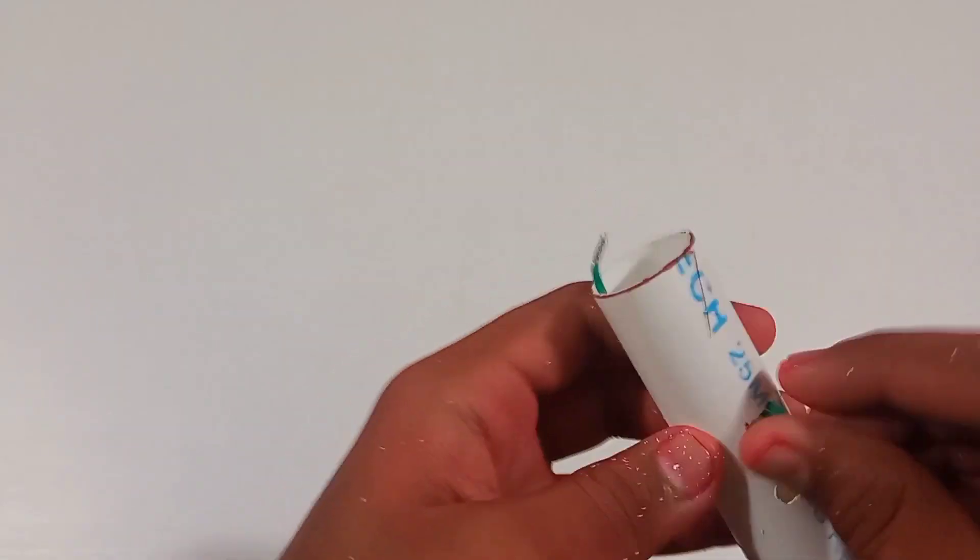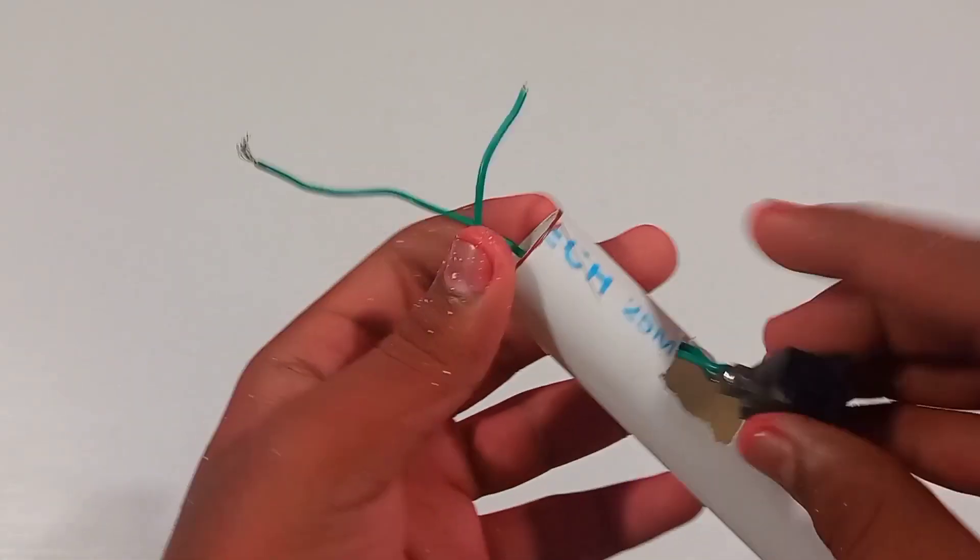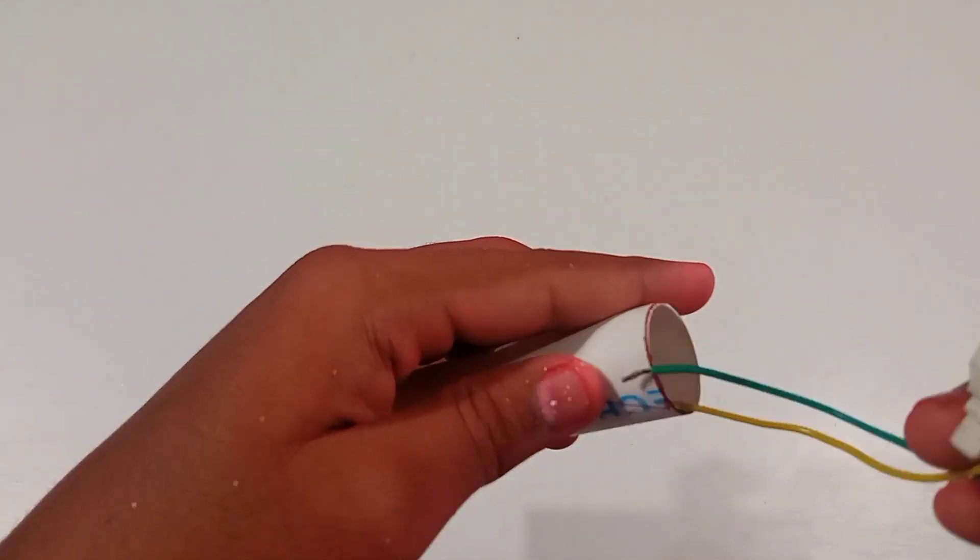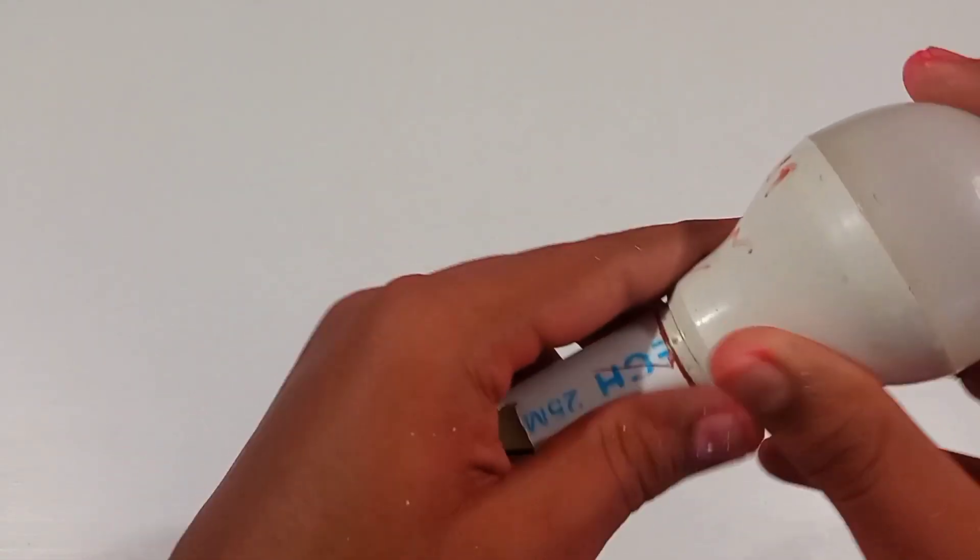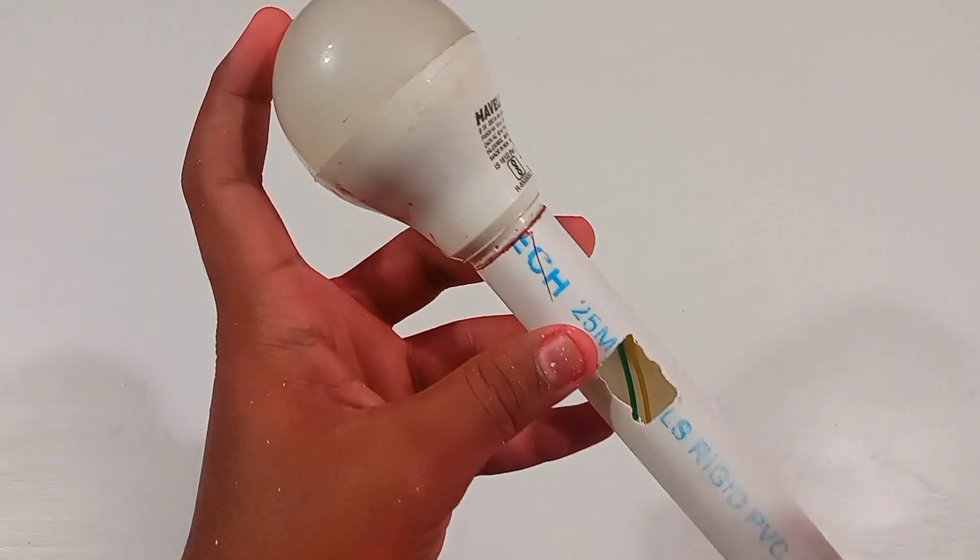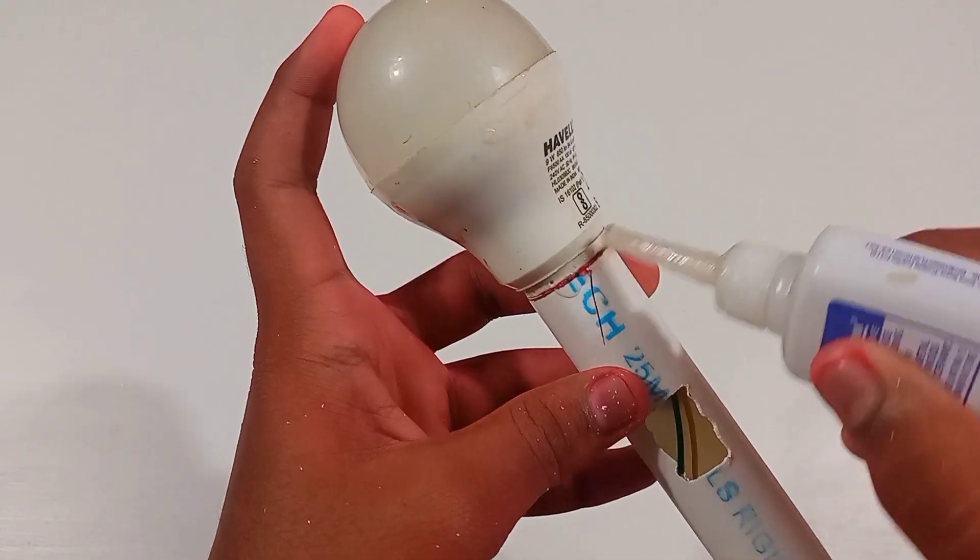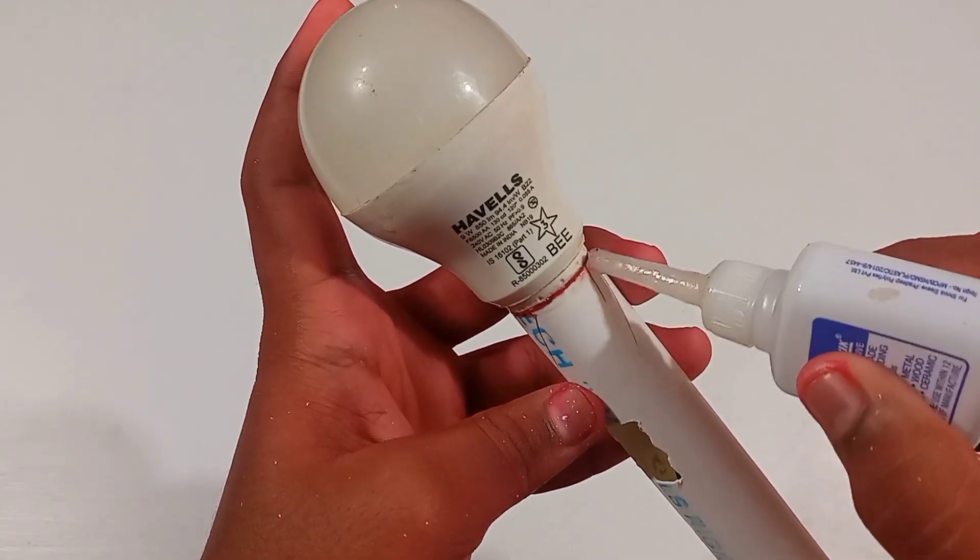If you want to check the target, you will need to check the target. Next, we will need to check the light. You will need to check the superglue and you will need to use the superglue too.